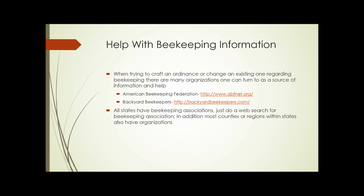If you need help crafting an ordinance or changing an existing one, there are organizations that people can turn to for help. First would probably be the American Beekeeping Federation. Also, Backyard Beekeepers. They will also have information about other ordinances and things that have been enacted and can give you suggestions. Every state has beekeeping associations, so you can just do a web search for the beekeeping association and the name of the state. Most counties or regions within states also have organizations. Once you've located a beekeeping organization, they can direct you to somebody who can help with information and education.